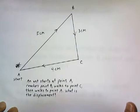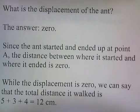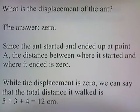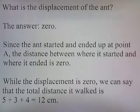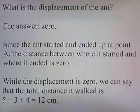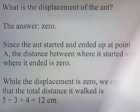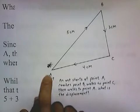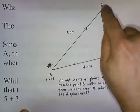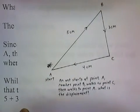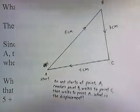What is the displacement of our ant following this path? The answer is zero. Since the ant started and ended up at point A, the distance between where it started and where it ended is zero. While the displacement is zero, the total distance it walked is 5 plus 3 plus 4, or 12cm. So displacement and distance are not necessarily the same thing.